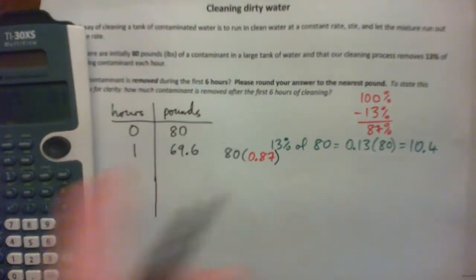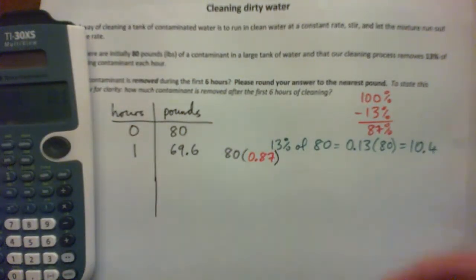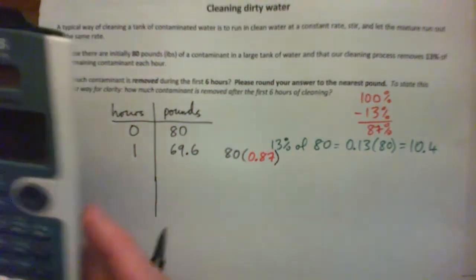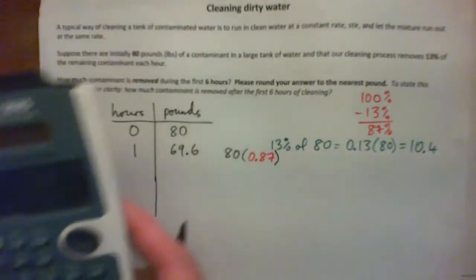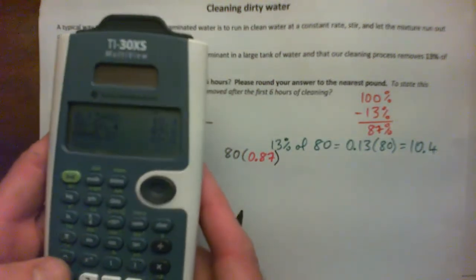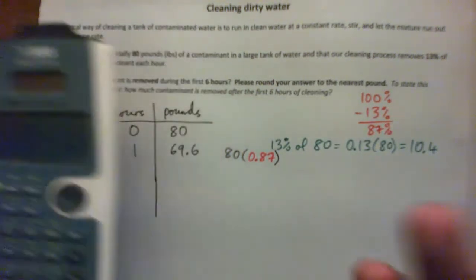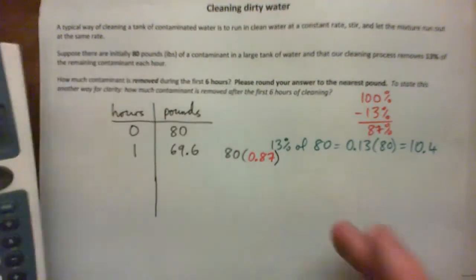And that will give the 69.6. This is going to be a lot more useful for us as we go along. So we can go 80 times 0.87 and that gives 69.6. So that does it in one step. There's no subtraction there.